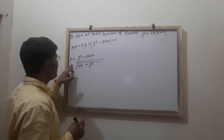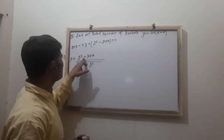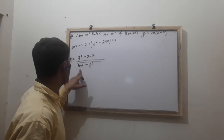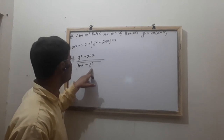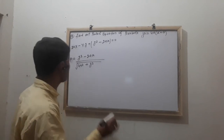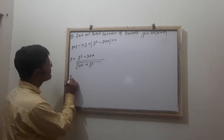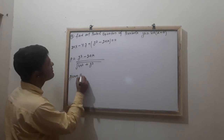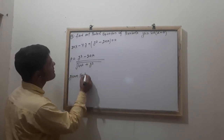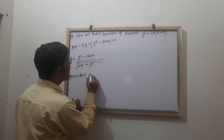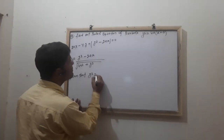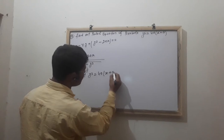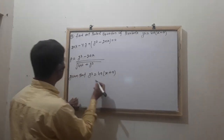P is equal to Y square minus 2AX divided by the square root of 4A square plus Y square. Given that Y square is equal to 4AX plus A.